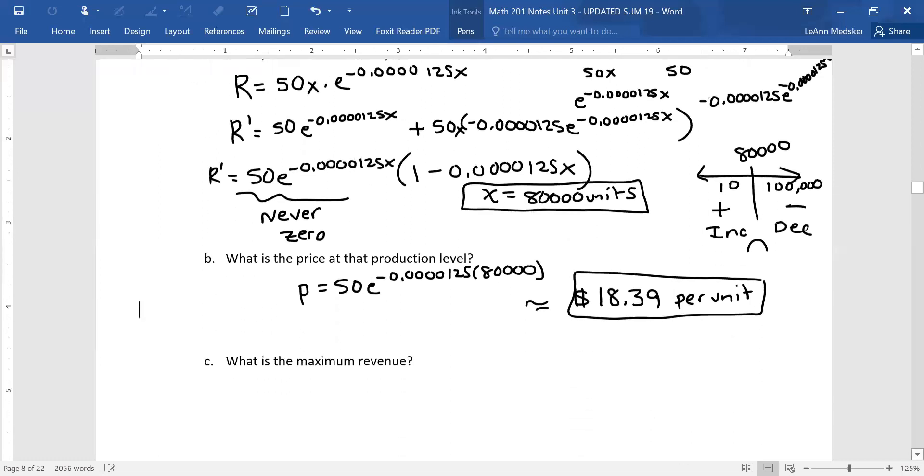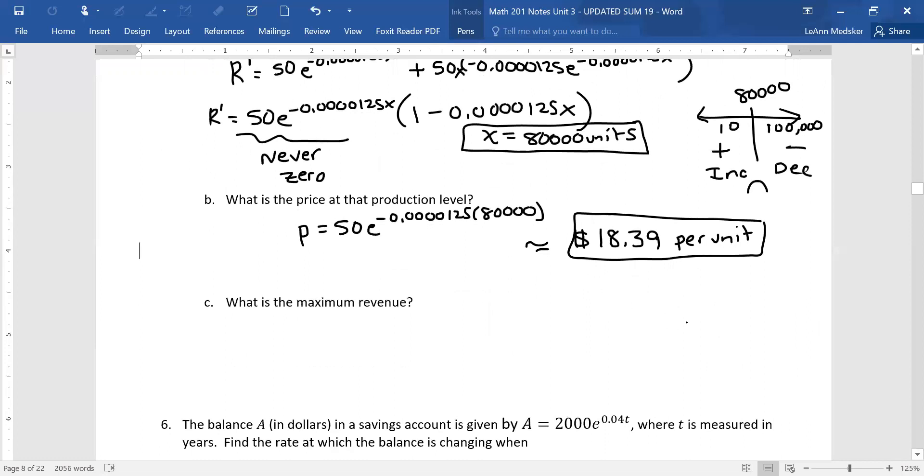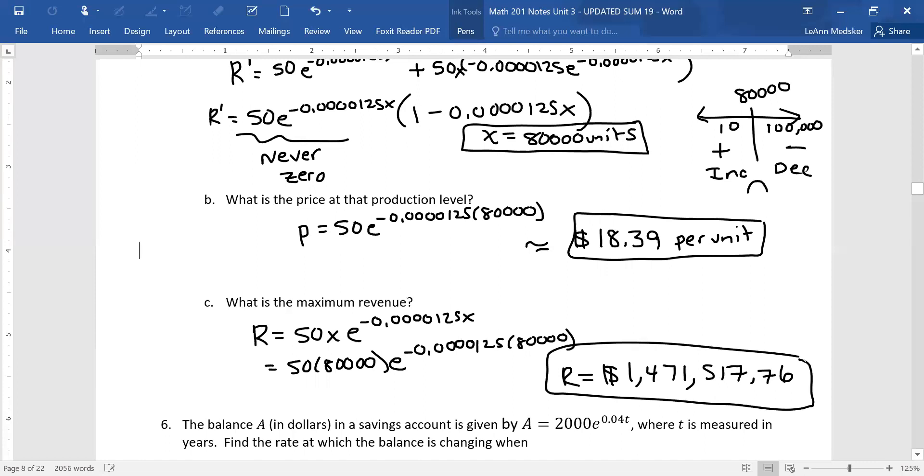And then the last question is, what is the maximum revenue? That's asking you for, if you have 80,000 units being used, and you plug it into your revenue equation, what would that max revenue be? So my revenue equation was 50X times E to the negative 0.0000125X. If we plug in 80,000 for both Xs, then what I came up with was that my revenue was equal to $1,471,517.76 if I round. So that's the max revenue that can be expected.